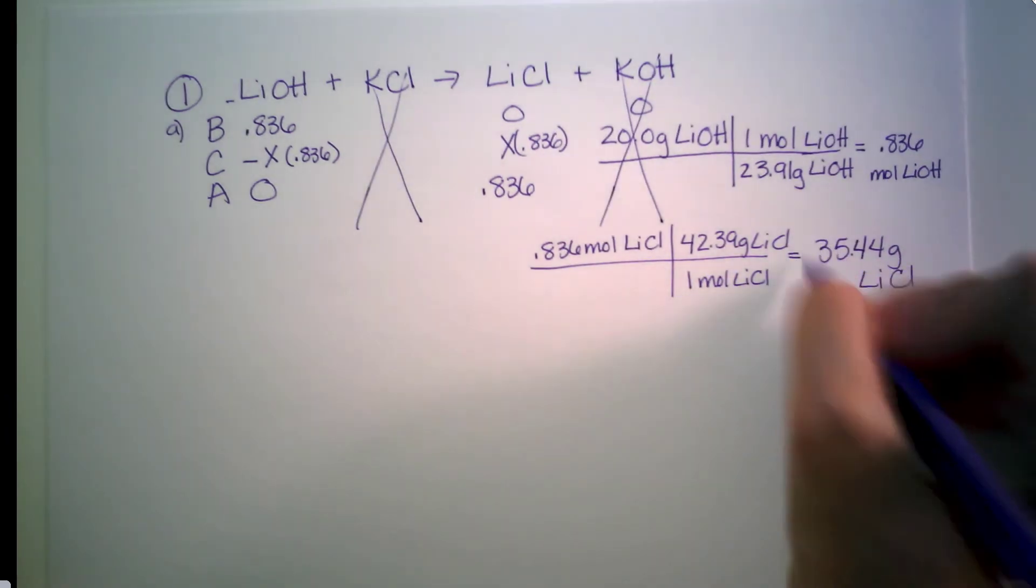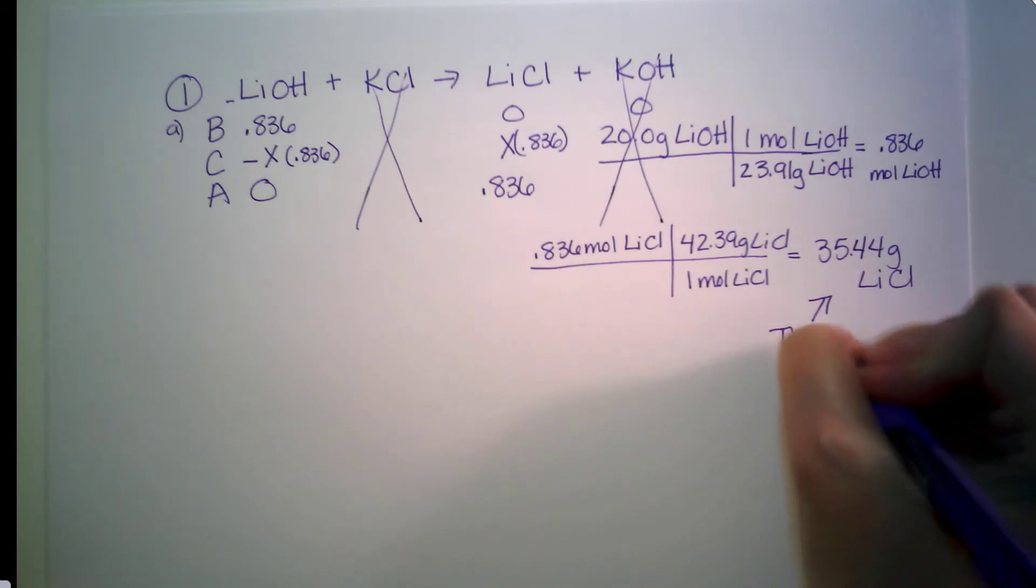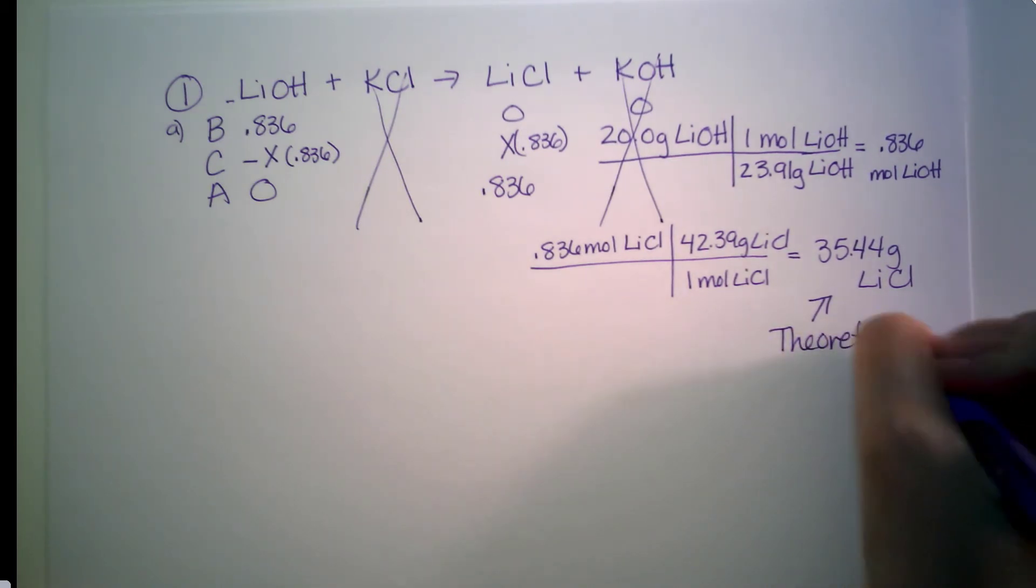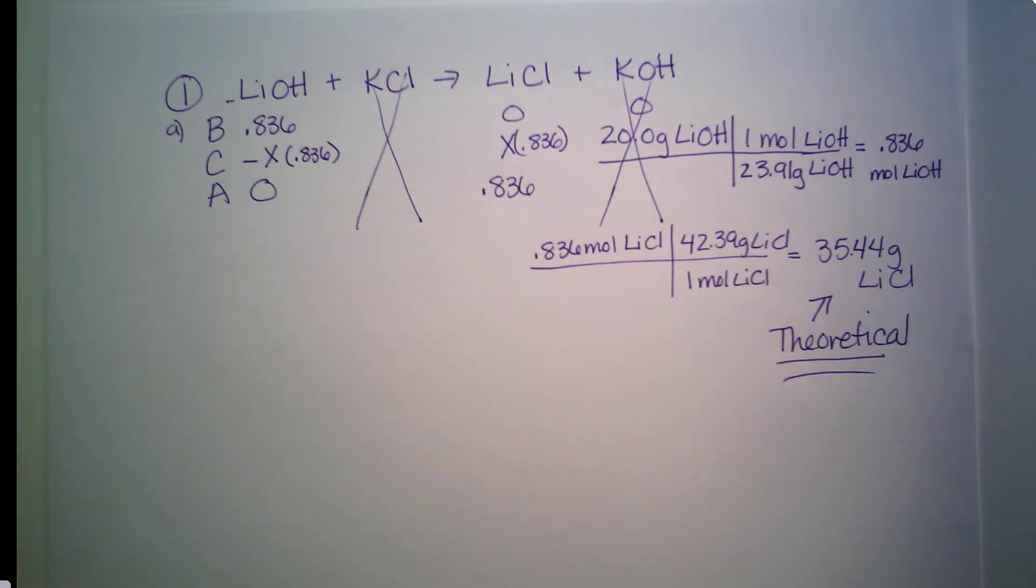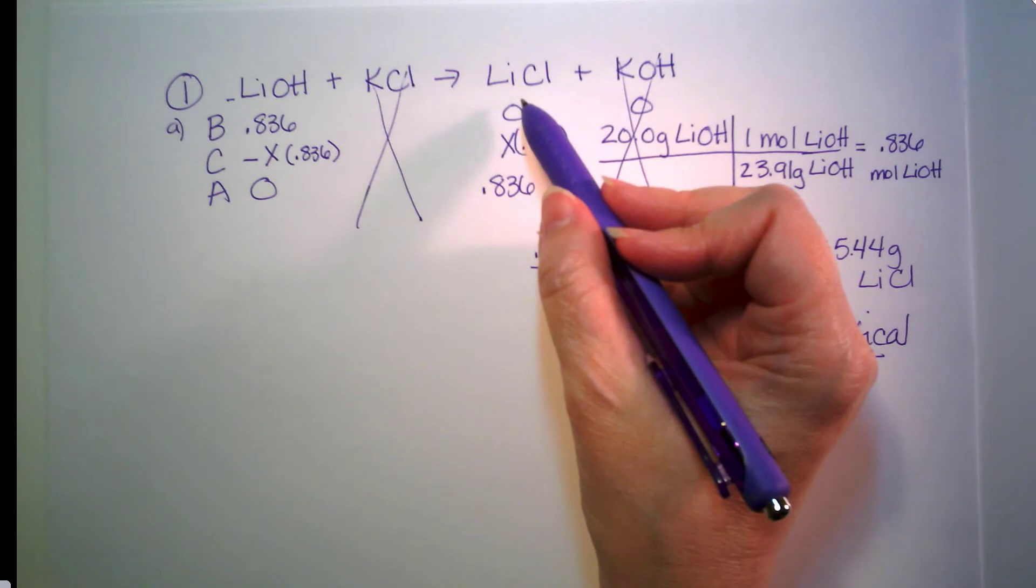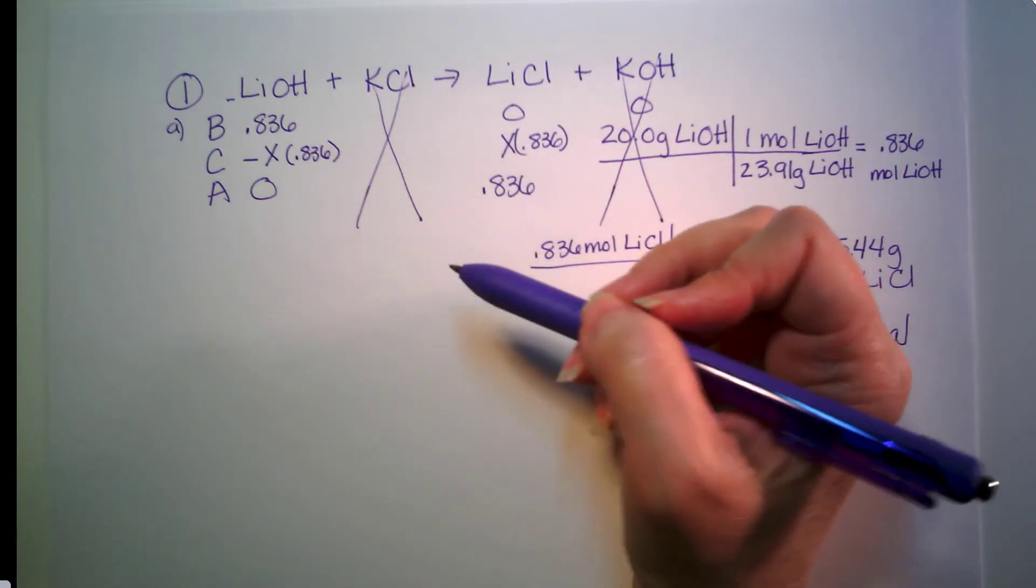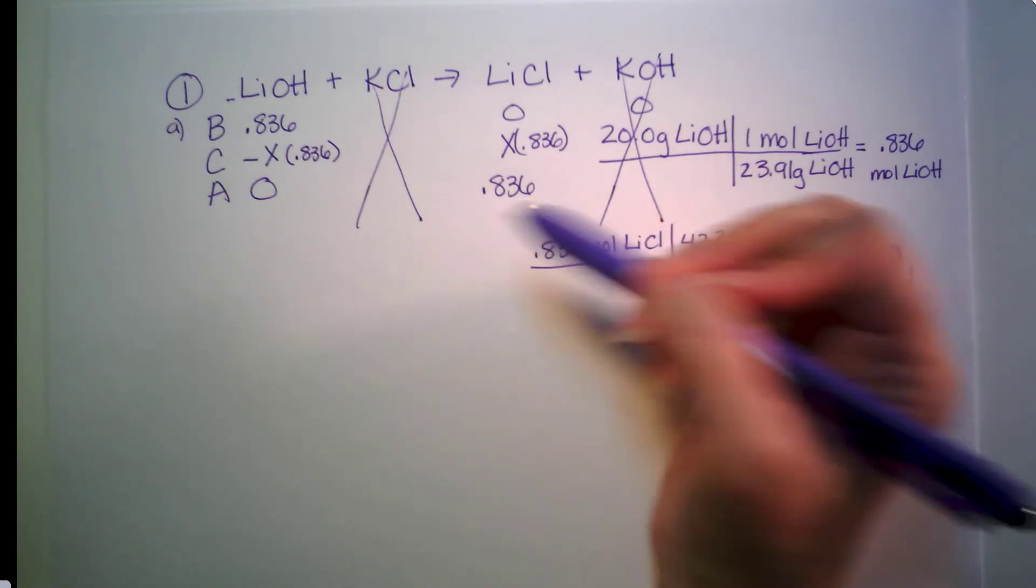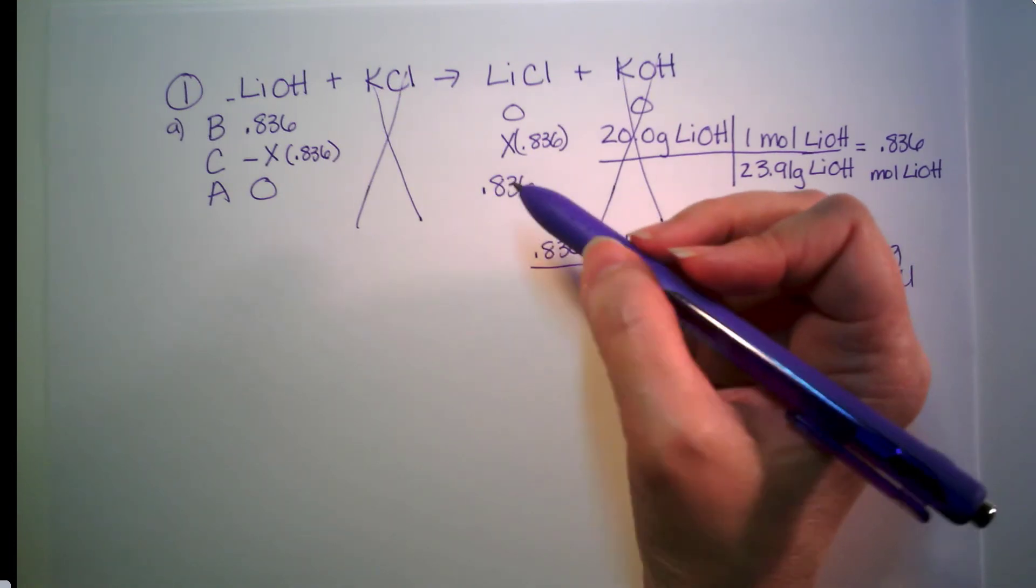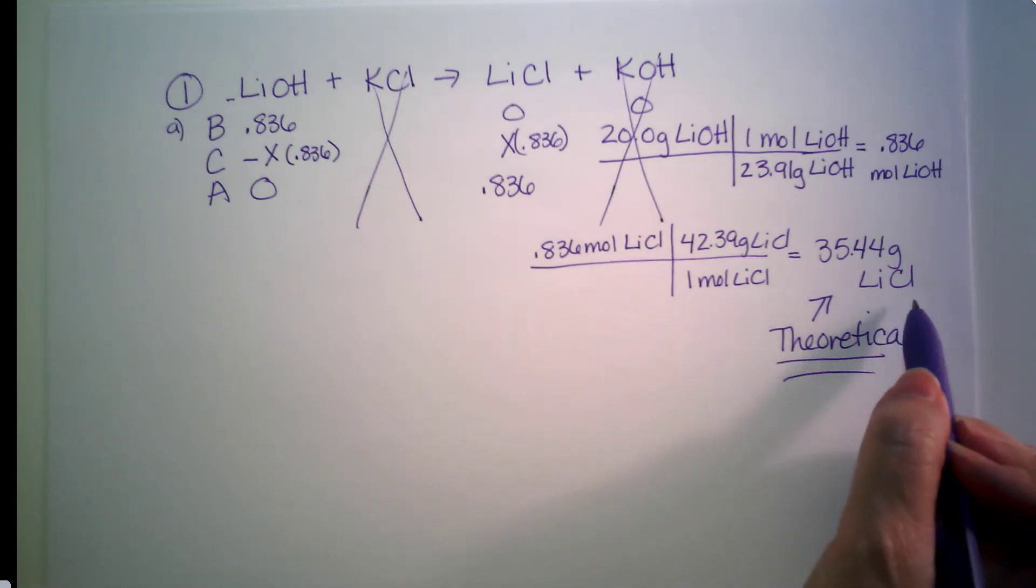Still not done yet. This right here. This is my theoretical yield. That is my theoretical. That is what I just calculated. That is how much I should be able to produce of lithium chloride, theoretically, assuming no one spills anything, nothing goes wrong, everything runs perfect, theoretically, I should be able to make 35.44 grams of lithium chloride.